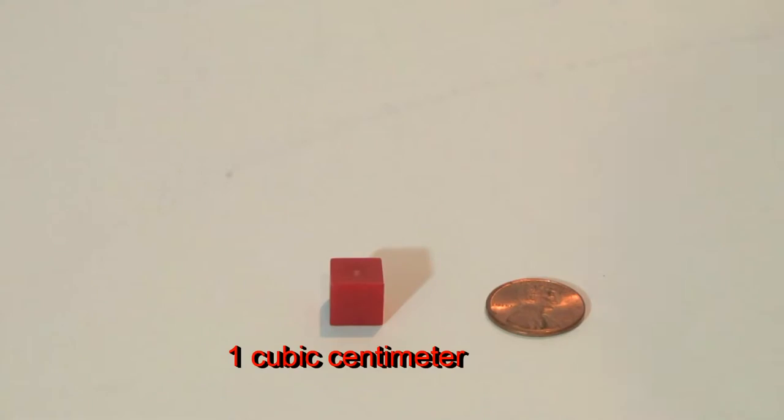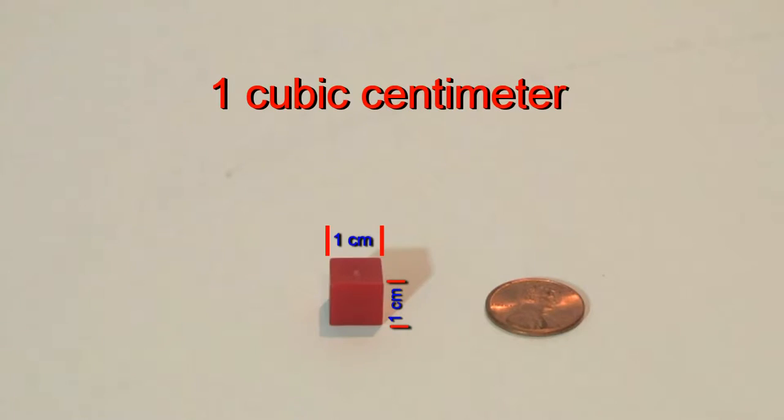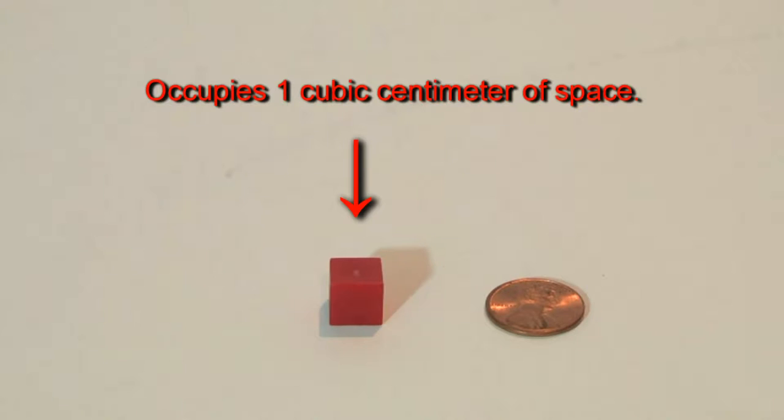This small red cube is called a cubic centimeter. That means that all of the edges of this cube are one centimeter long. It also means that the red cube takes up, or occupies, one cubic centimeter of space.